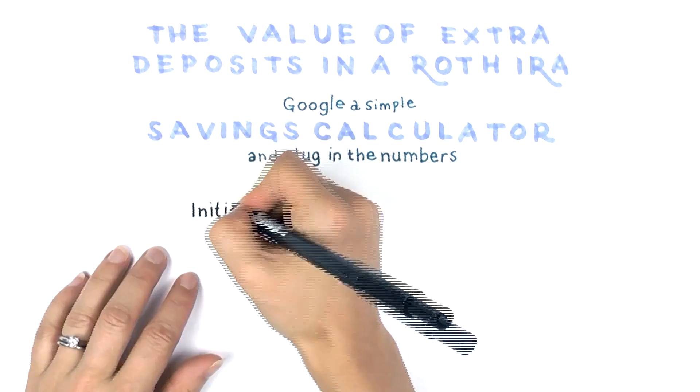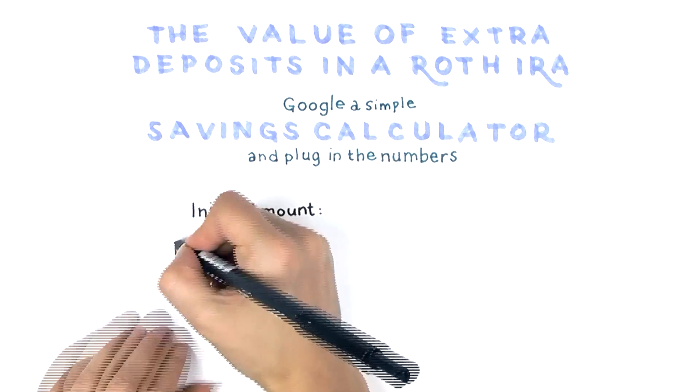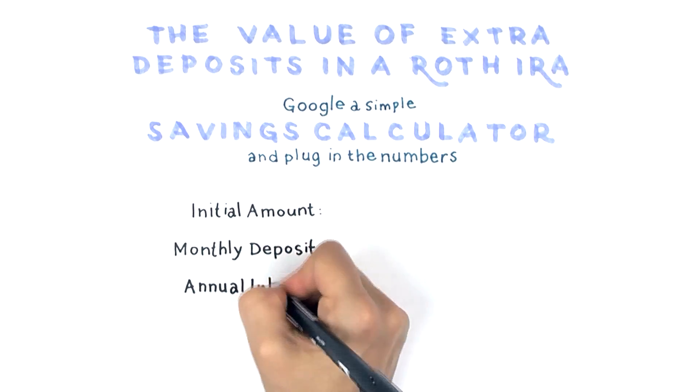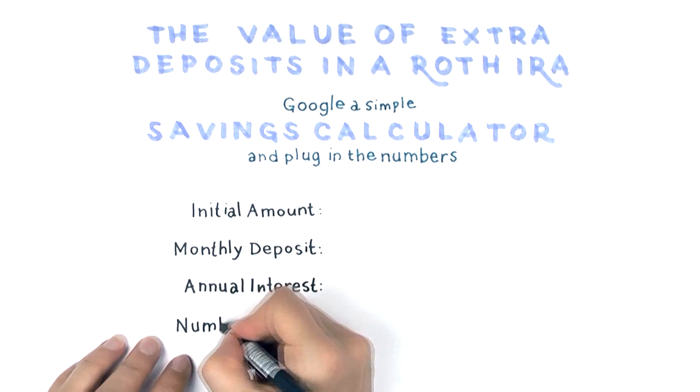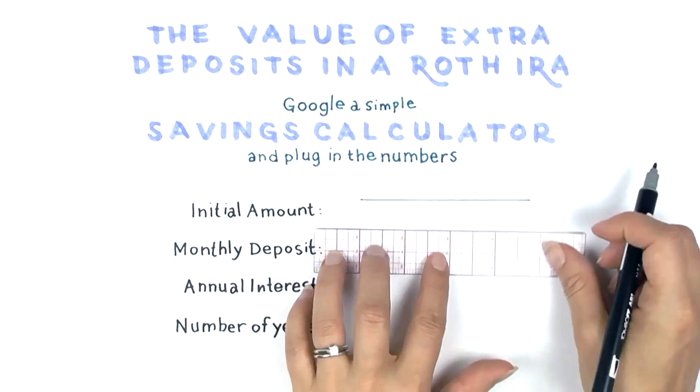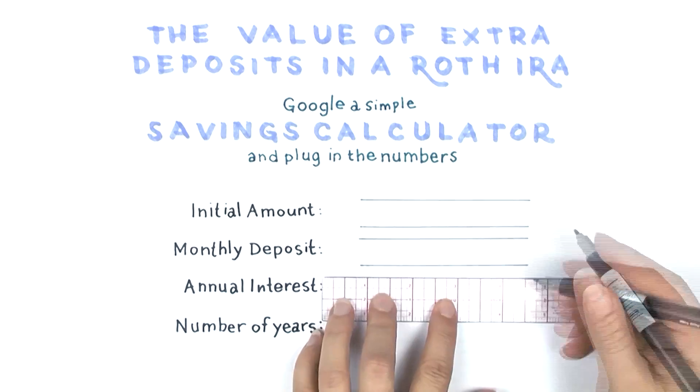Keep in mind, investing in stocks and bonds can be highly variable, but with a long time frame, I'm going to assume 25 years until retirement, we can safely assume a positive return. For this example, I'm going to use an average annual increase of 7%.